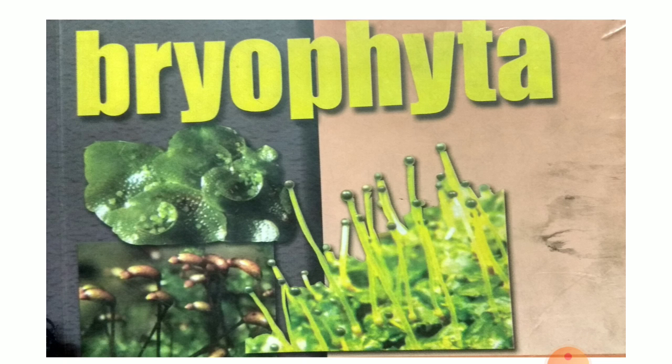We all know that Bryophytes have a dominant gametophytic phase, while all other land plants have the sporophytic phase. It is also believed that the sporophyte-dominant group, Pteridophyta, arose from Bryophytes.